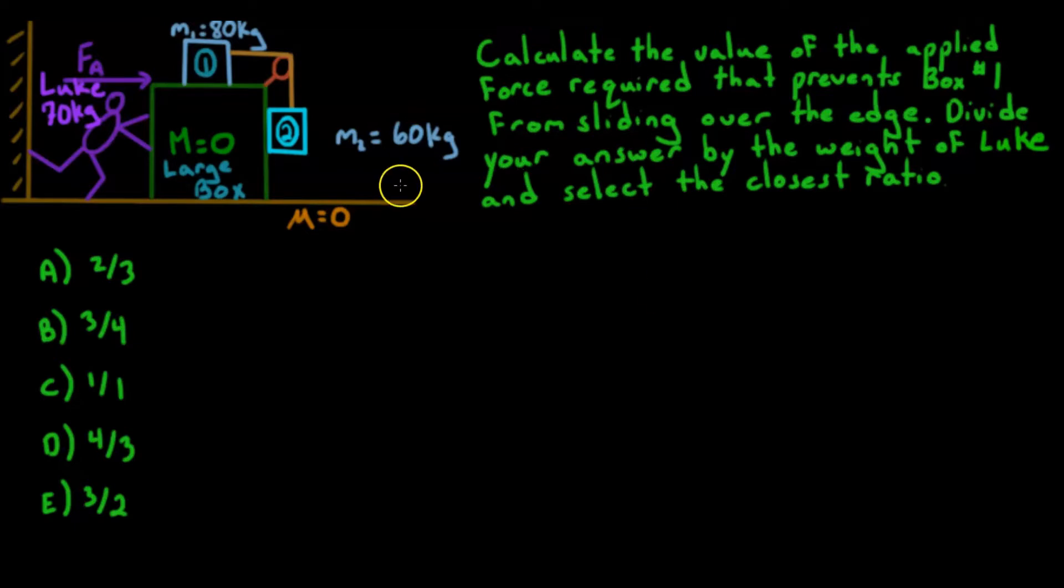Here's what the problem asks. Here we have a large box that is massless. On top of it, we have a smaller box, let's call it box 1, that has a mass of 80 kilograms, connected by a rope over a pulley to another hanging box with mass 60 kilograms.